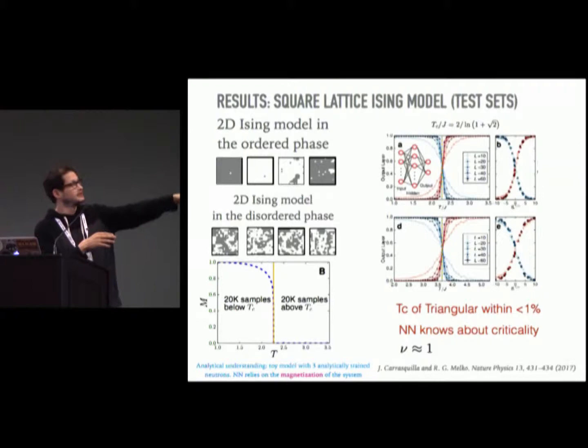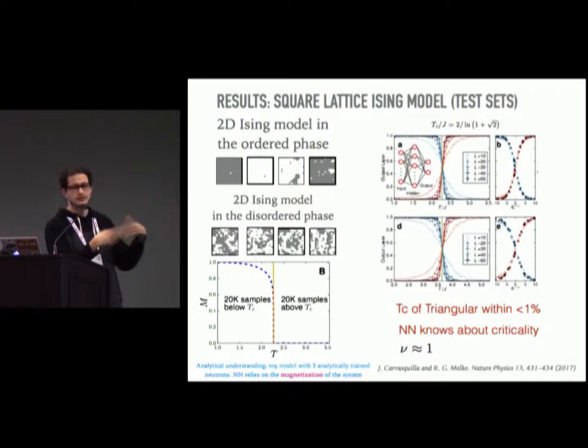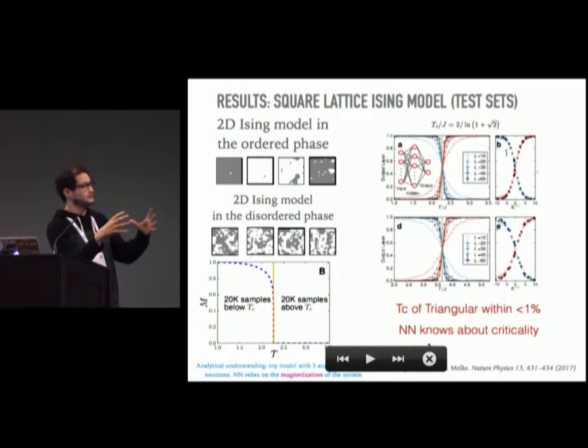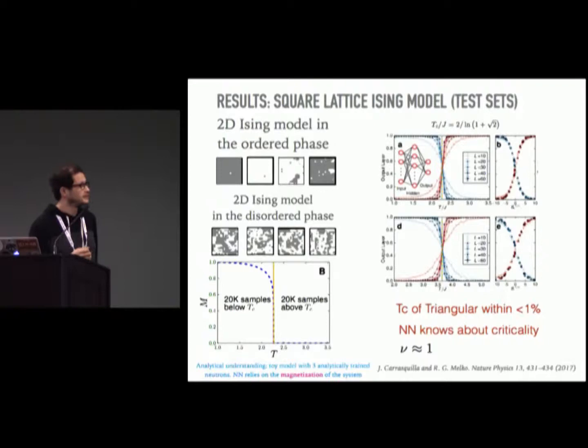That crossing point coincides with the critical temperature of the model. Even more, in figure B you can get a collapse using ideas from the renormalization group, and extract the critical exponent ν — the correlation length exponent — pretty accurately. This was perhaps the most interesting result: we trained the model on the square lattice Ising model, then applied the trained neural network to samples from the triangular lattice, and were able to compute the Tc of the triangular lattice from the model trained on the square lattice.